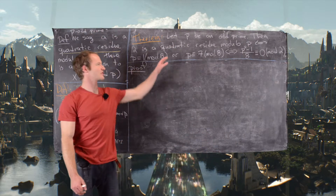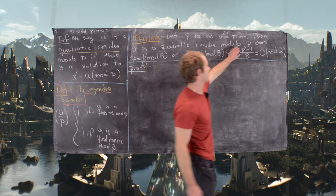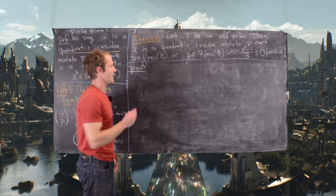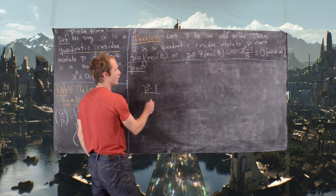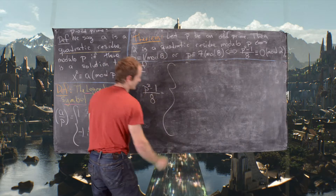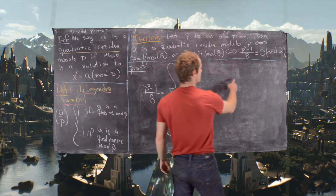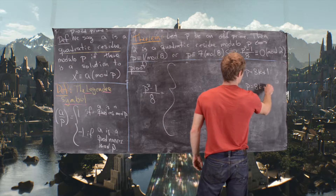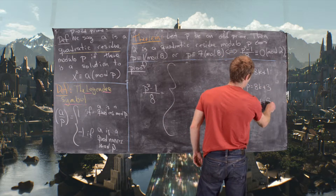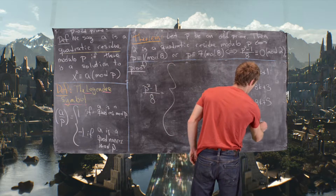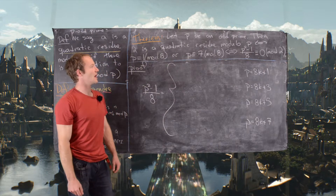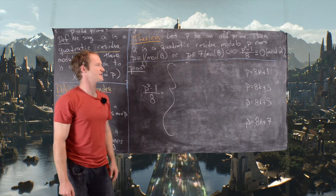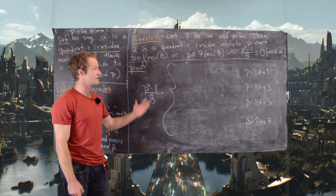For the second equivalence, we'll calculate (p²−1)/8 for all possible values of the prime modulo 8 — that is, for p = 8k+1, 8k+3, 8k+5, and 8k+7. We expect that p ≡ 1 or 7 (mod 8) will give (p²−1)/8 ≡ 0 (mod 2), and the other cases will give 1 (mod 2).